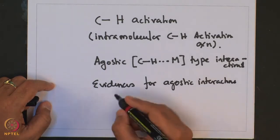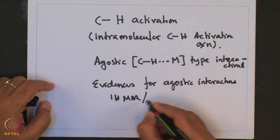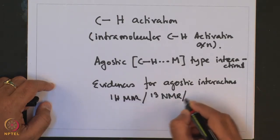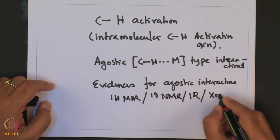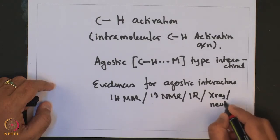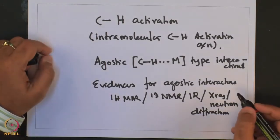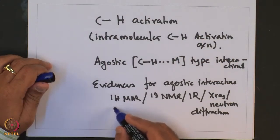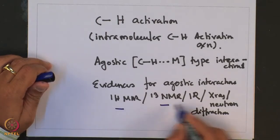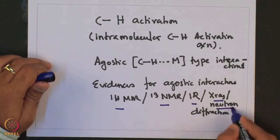Evidence for agostic interactions involves various spectroscopic techniques like proton NMR, carbon-13 NMR, IR, as well as X-ray and neutron diffraction studies. The agostic interaction weakens the CH bond but does not fully cleave it, and that weakening can be observed in the spectroscopic signatures of proton, carbon, and IR spectroscopy, as well as structural characterization using X-ray and neutron diffraction techniques.